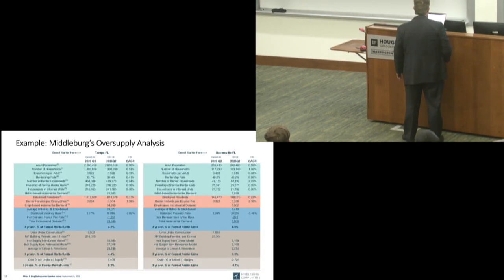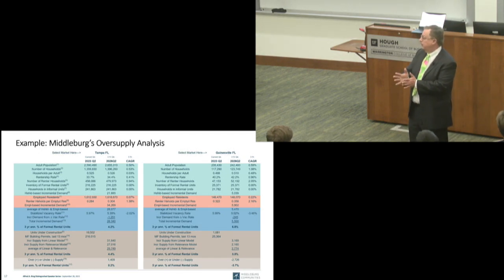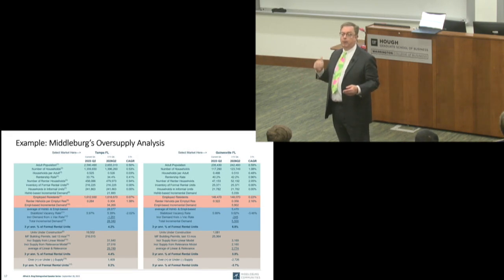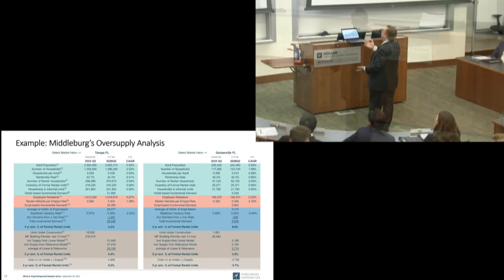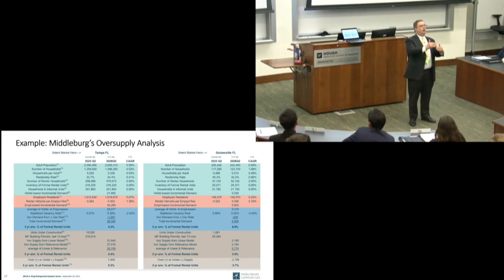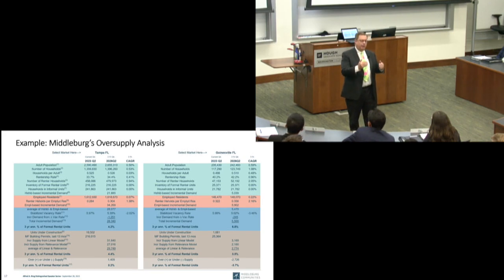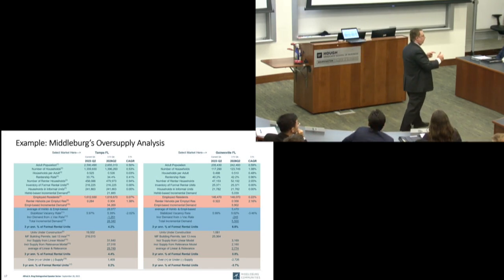Let's talk about how we put these data together. We put information on dashboards available to a lot of people in the company. We want them to understand why we're making decisions to build here and not there. The top section evaluates incremental demand over the next three years based on our forecast of changes in households — we forecast growth in the adult population and apply our analysis of households per adult to get a population-based forecast of future household demand.